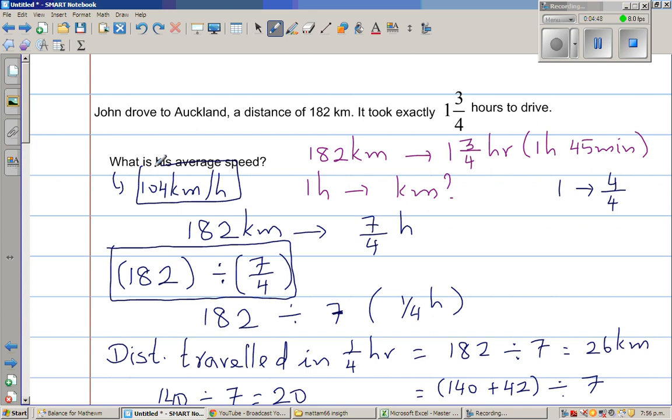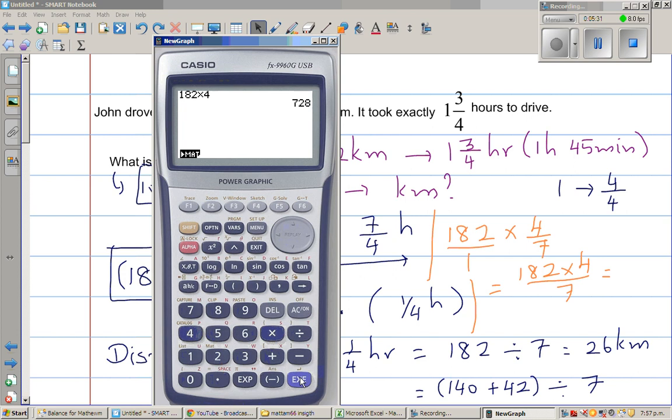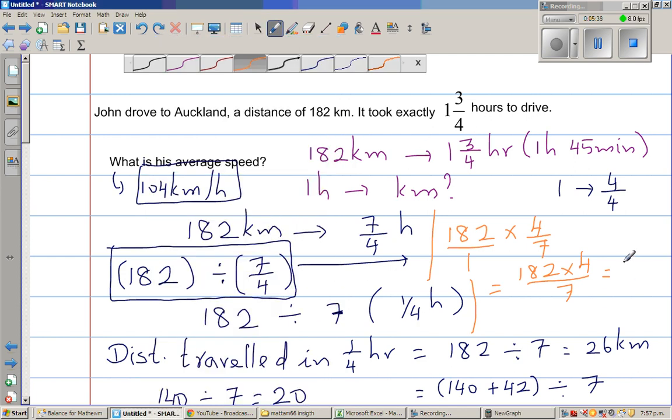So this is the answer. Now let me come back to this. I told you I'll explain this. So this is 182 divided by seven quarter. Dividing by seven quarter is the same as multiplying by the opposite. This is 182 times four over seven. So this is 182 times four divided by seven. Let me use a calculator. So 182 times four is 728, and that divided by seven, which is 104. So this is how you do with the calculator.